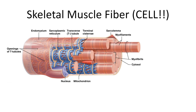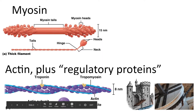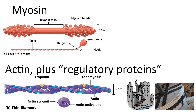Inside myofibrils we find the last two fibers of this rabbit hole — these are called myofilaments. There are two types: thick filaments called myosin and thin filaments called actin. These are two long filament proteins that interact to produce skeletal muscle contraction. Myosin filaments have structures called heads that attach to the actin filament at an area called the active site and then pull the filaments closer together during contraction.